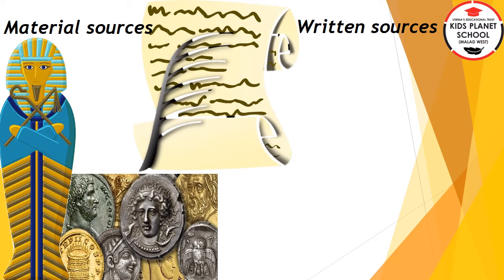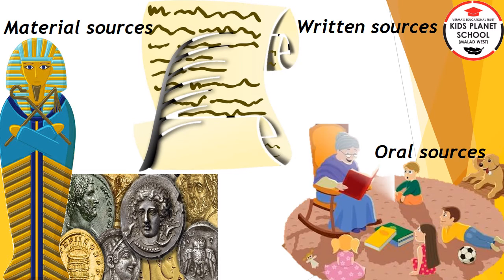The sources of history are of three types: material source, written source, and oral source. In order to find out what happened in the past and how it happened, evidence available from all these sources is collected and thoroughly examined to determine its reliability. When we put it in proper sequence and make sure it is true, that method is called the scientific method.